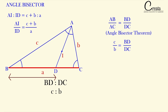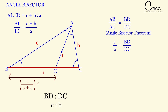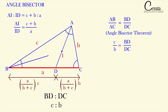Using ratio and proportion, BD = (a · c) / (b + c) and DC = (a · b) / (b + c), since the complete length BC equals a. Now let's take the angle bisector from point B — we extend it only up to the incenter point I, not all the way to side AC.